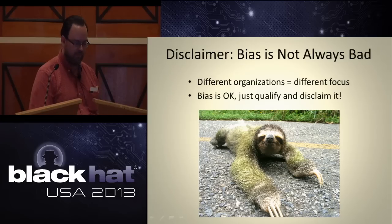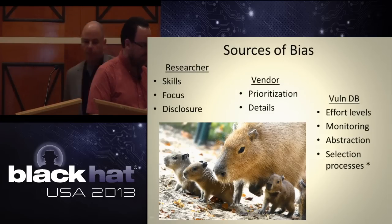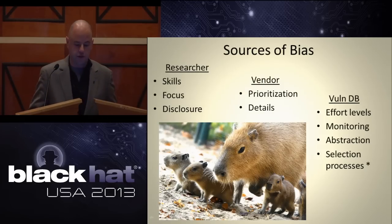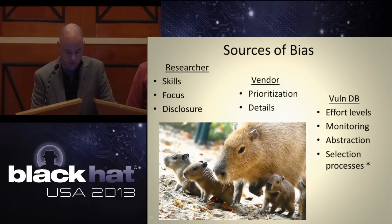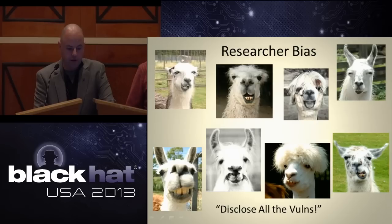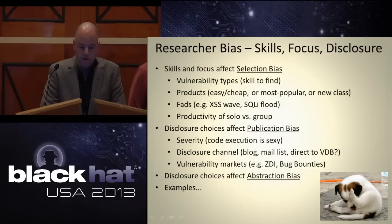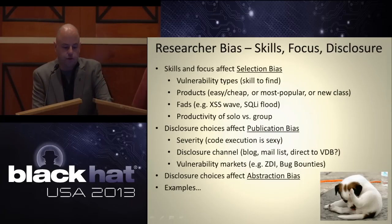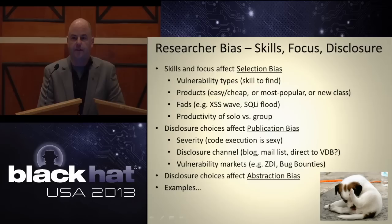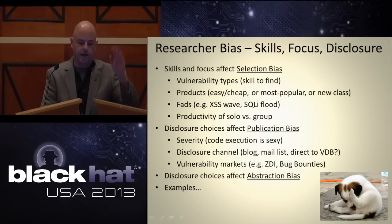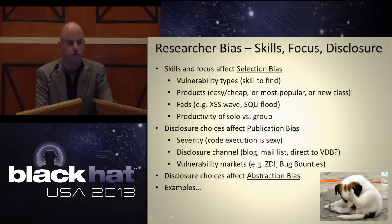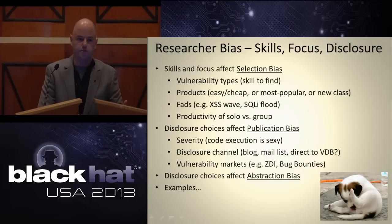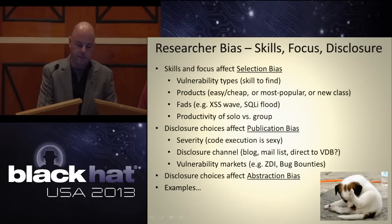Okay, so sources of bias — we've mentioned three kinds: researcher, vendor, and VDB. First, researcher bias, based on skills, focus, and disclosure. Some kinds of vulnerabilities anyone can find — cross-site scripting, bang in some script code, magic, works. Some people can find SQL injection only via certain methods. Some cannot find memory corruption — it just takes skill you may or may not have. All of that influences these stats. Then publication bias — what's the severity? Everyone loves to see code execution, remote code execution — that's the money shot. So that's what we tend to see from some researchers, and then finding other vulnerabilities is like, I don't want to take the thunder from that RCE, I'm going to forget about all the other eight vulnerabilities I found.